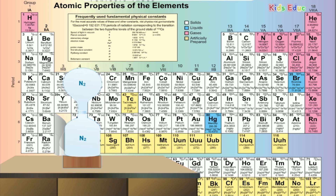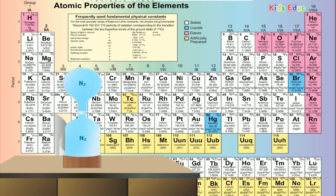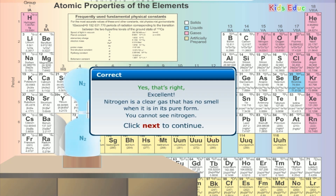We know the chemical symbol for nitrogen is N2 — that is, two nitrogen atoms. Nitrogen is the seventh element of the periodic table, located between carbon and oxygen. Let's get one nitrogen element and the second nitrogen element. Excellent! Nitrogen is a clear gas that has no smell when it is in its pure form; you cannot see nitrogen.